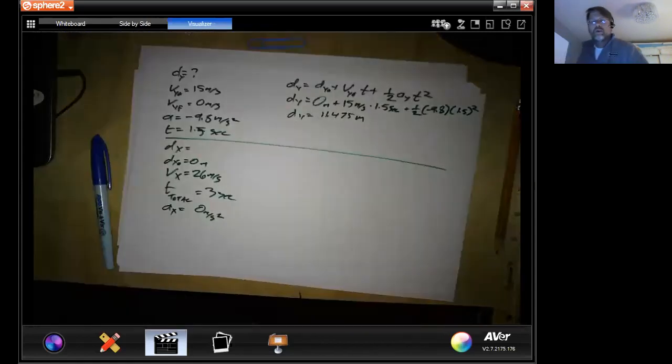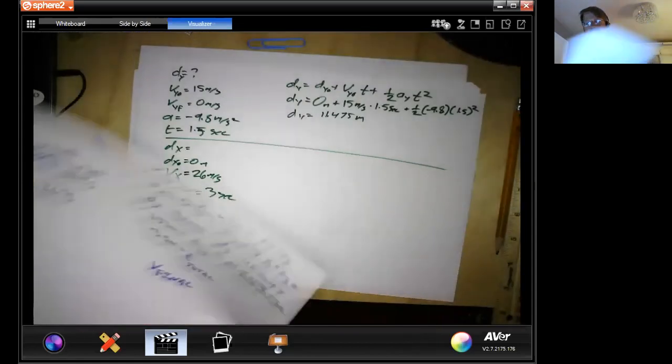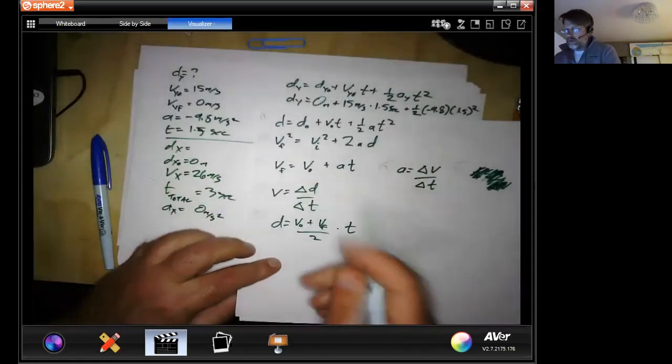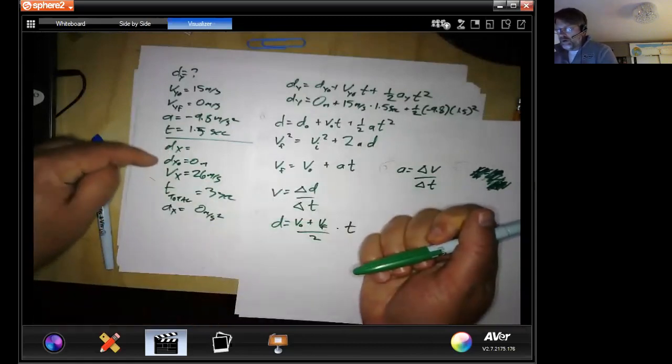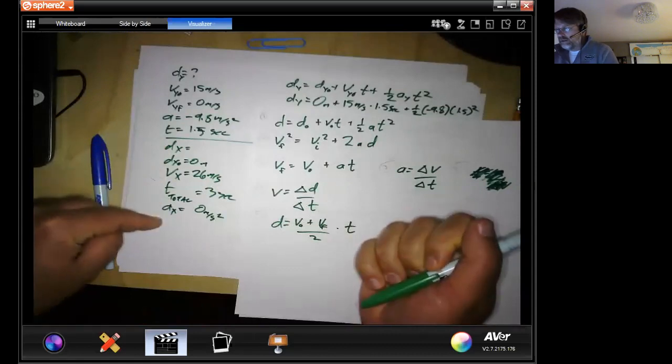So now we can go through and make some choices here in terms of what equation is going to give us dx. If we know our velocity and our time. And by the way, the acceleration doesn't change.